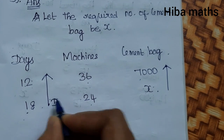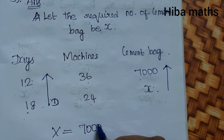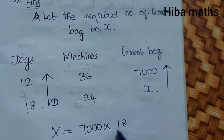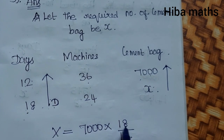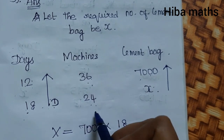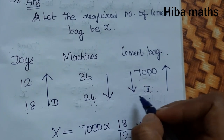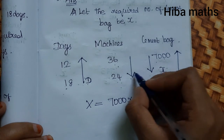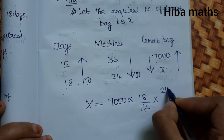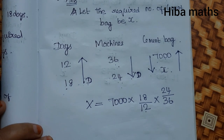This is a direct proportion. I will set x equal to 7000 and increase x accordingly. If the machine count goes down, you expect fewer cement bags — so this is an indirect proportion. Direct proportion: I am going to use the top, then 36. This is very important — if you have done this, you will get the answer easier.